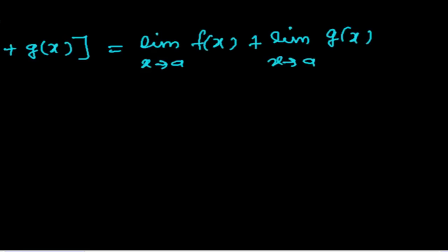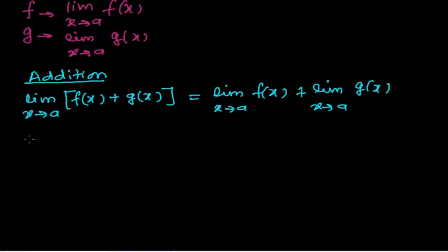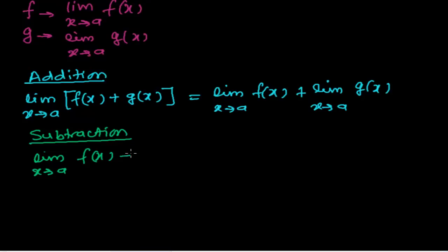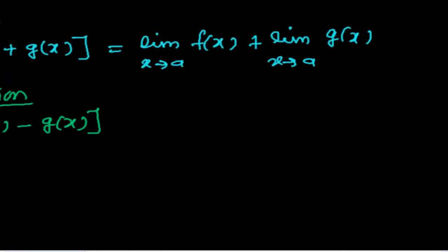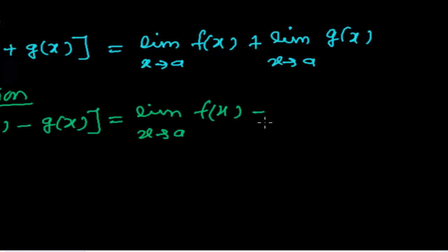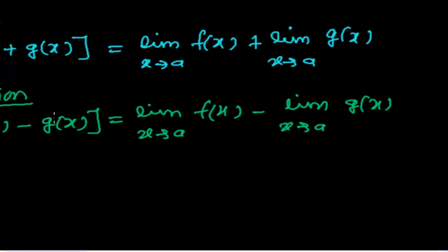Now another one — subtraction. In the subtraction of two functions, taking the limit: suppose the limit as x tends to a of f(x) minus g(x). Just like addition, this equals the limit as x tends to a of f(x), minus the limit as x tends to a of g(x). If there is a difference of two functions and we take the limit, it equals the limit of the first function minus the limit of the second function.